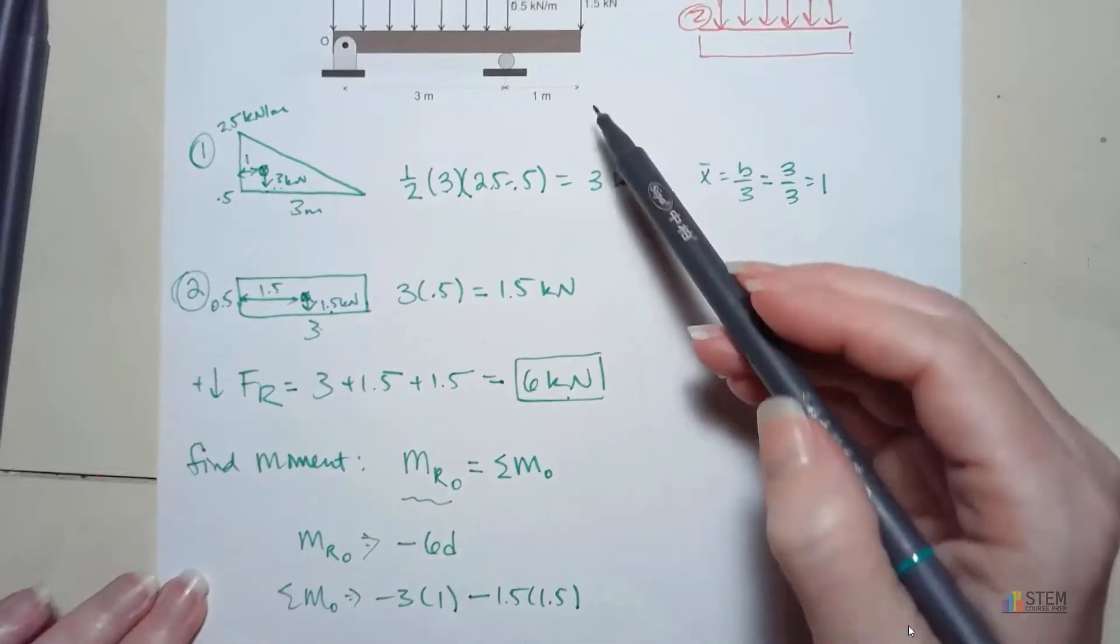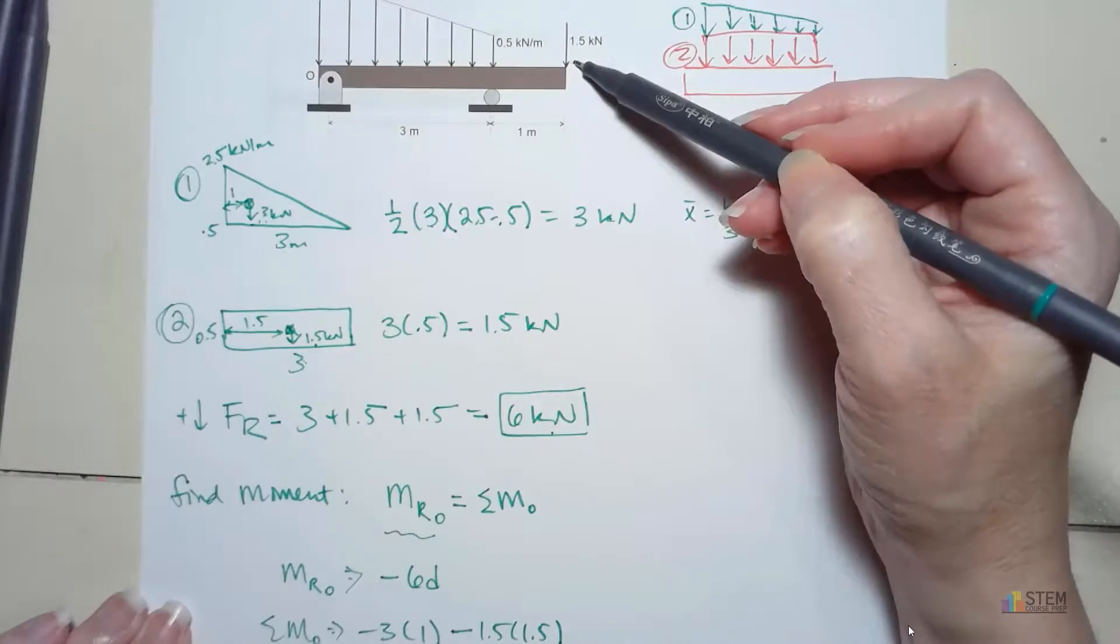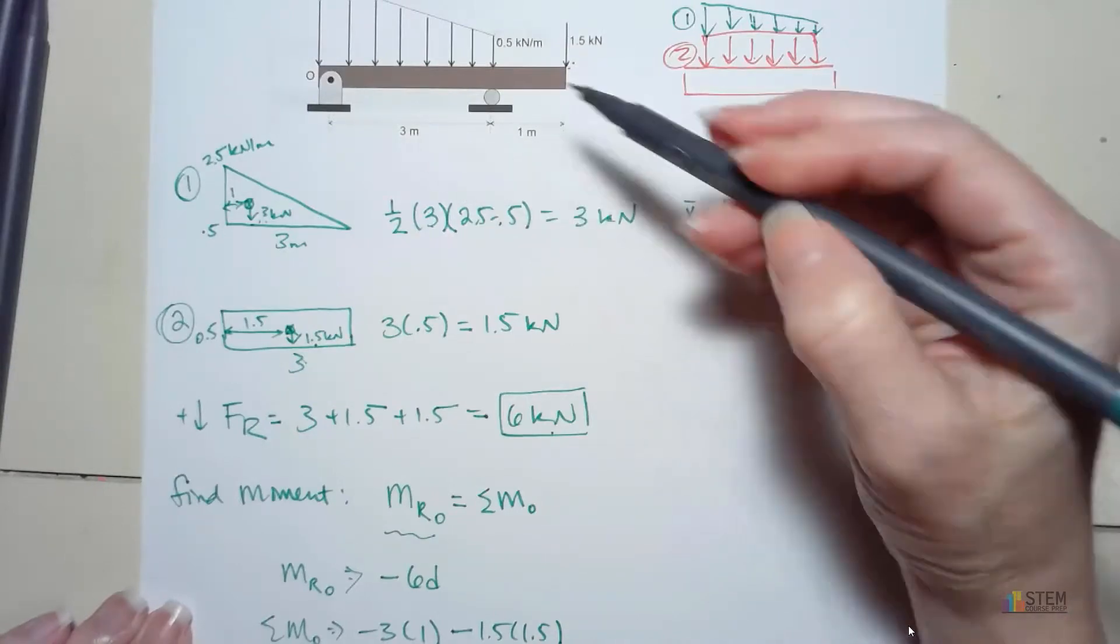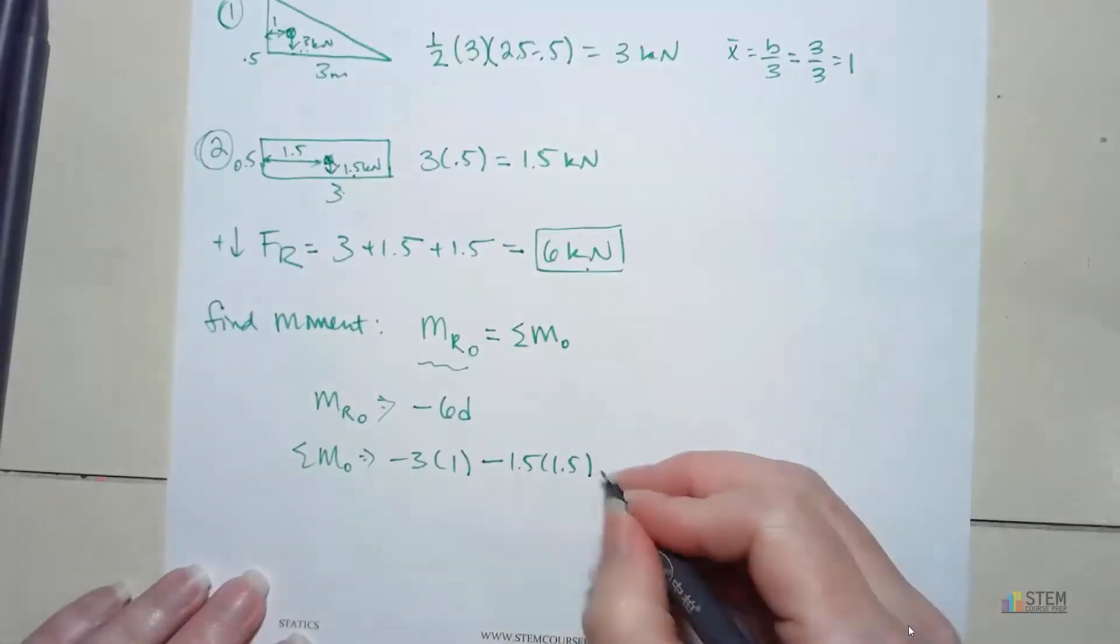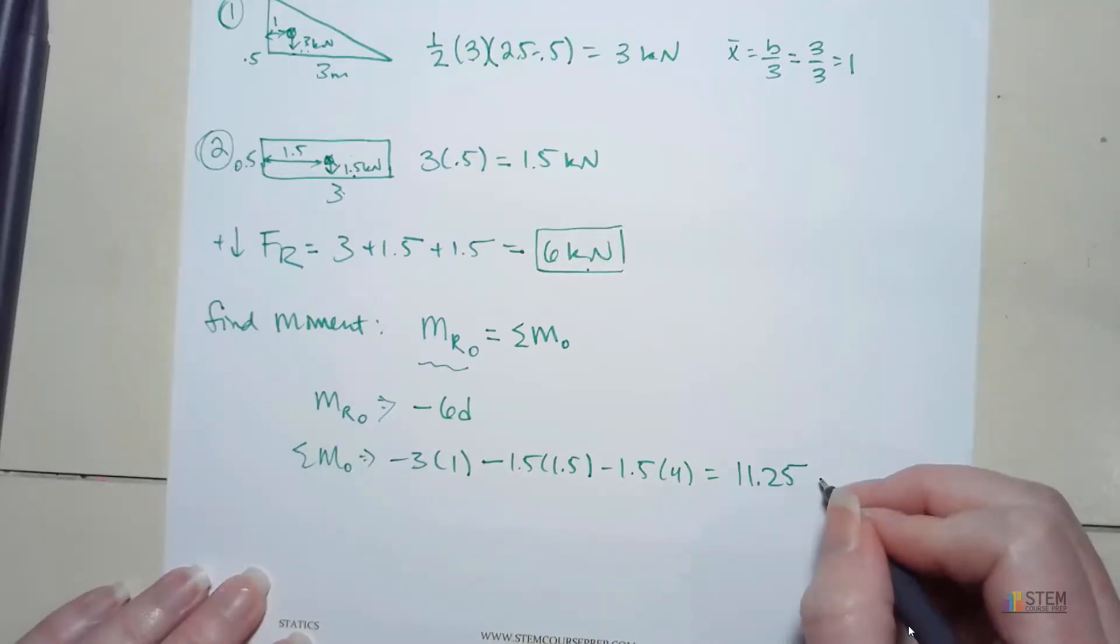Then finally, let's look up here. We have this force over here. So 1.5, that's at a distance of 4. So we'll have minus 1.5 times 4. That gives you 11.25. And these are both kilonewton meters.